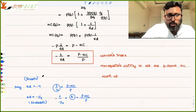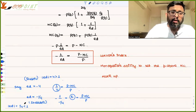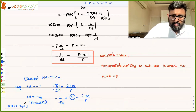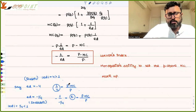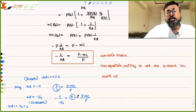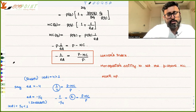In percentage terms: in the case of an elastic demand curve, the monopolist's power is to set the price just 25% above the cost. But in the case of the inelastic demand curve, his power is to set the price 400% above the cost. This is what I wanted to cover in this class. Thank you very much.